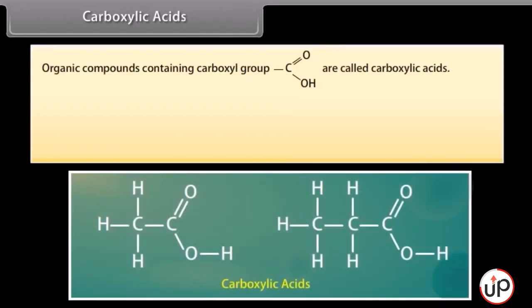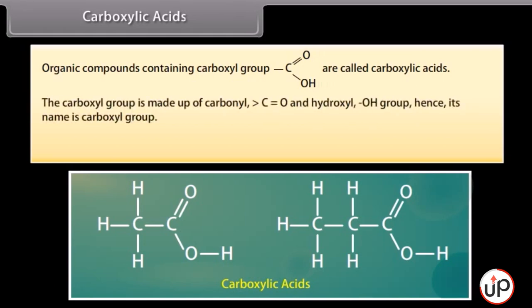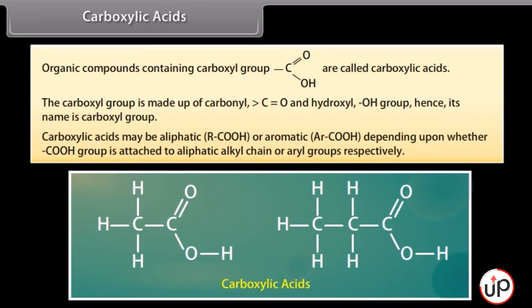Carboxylic acids: organic compounds containing a carboxylic group are called carboxylic acids. The carboxyl group is made up of a carbonyl and a hydroxyl group, hence its name. Carboxylic acids may be aliphatic or aromatic depending upon whether the carboxyl group is attached to an aliphatic alkyl chain or aryl groups respectively.